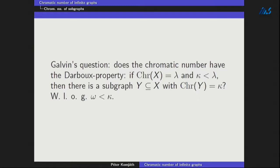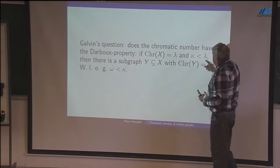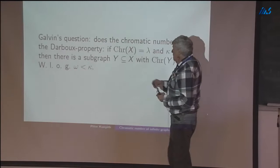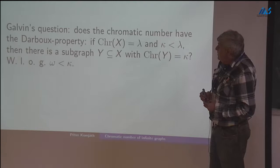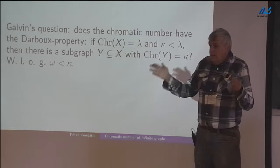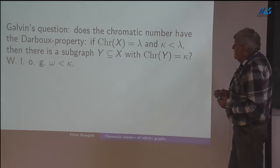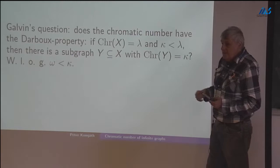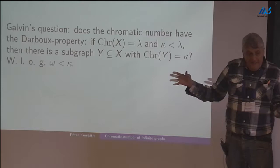So here is Galvin's question: is it true that the chromatic number has the so-called Arbu property? Namely, if we have a graph whose chromatic number is exactly lambda, and kappa is any cardinal less than lambda, then there is a subgraph of X whose chromatic number is exactly kappa. This is obviously true if lambda is finite — if lambda is 28, we can go one by one and get any smaller chromatic number. However, it is true if kappa is Aleph naught, because if the chromatic number is greater than Aleph naught, then it contains arbitrarily large chromatic finite subgraphs by the Erdős-Debrun theorem, and their union has chromatic number exactly Aleph naught.